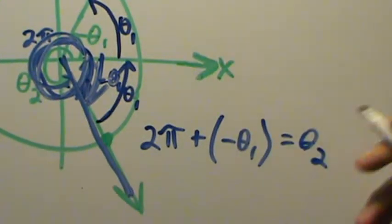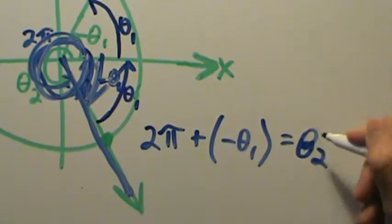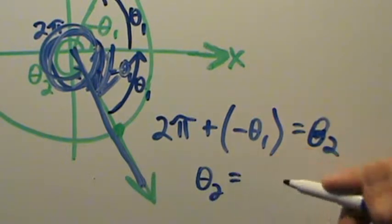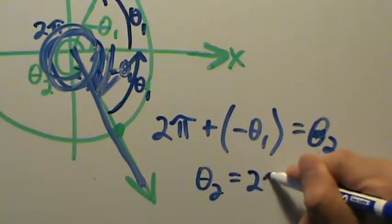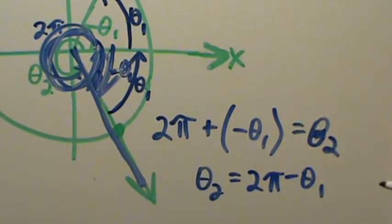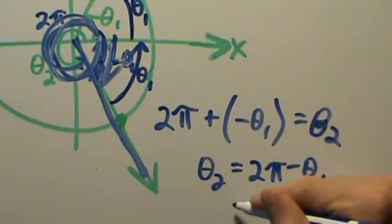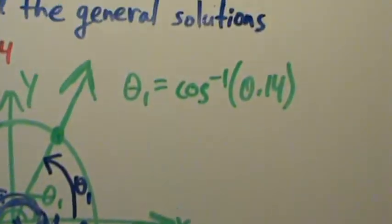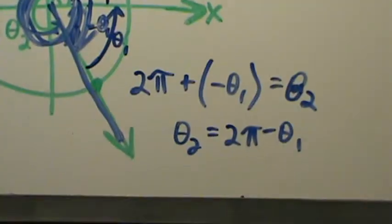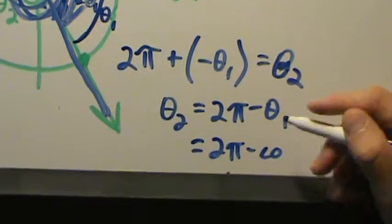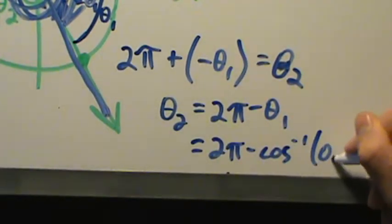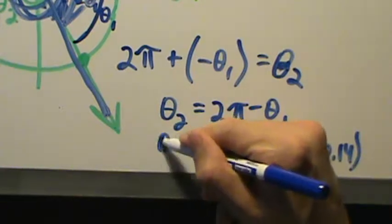Okay, that is our theta 2. So in other words, theta 2, when we simplify this 2 pi plus negative theta 1, means minus 2 pi minus theta 1. That is our angle theta 2. Okay, and we know what theta 1 is. It's inverse cosine of 0.14. So this is 2 pi minus the inverse cosine of 0.14. Okay, that's what our theta 2 is.